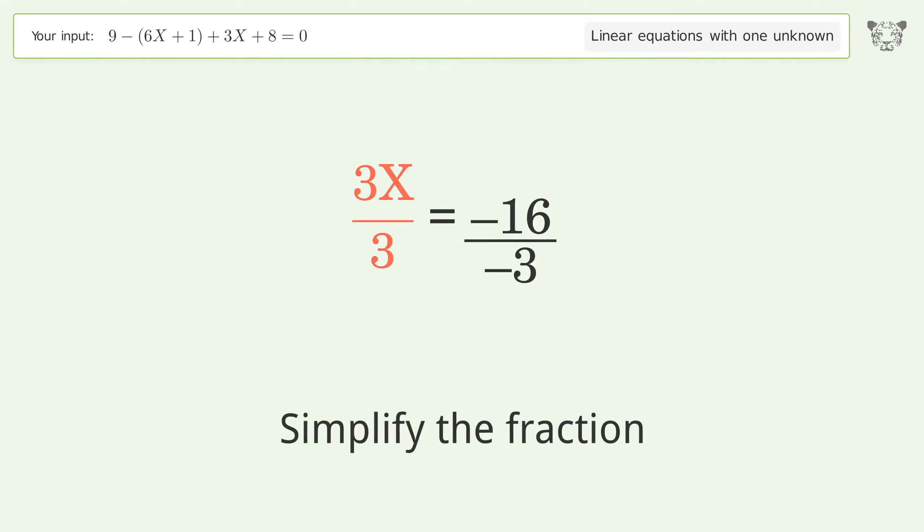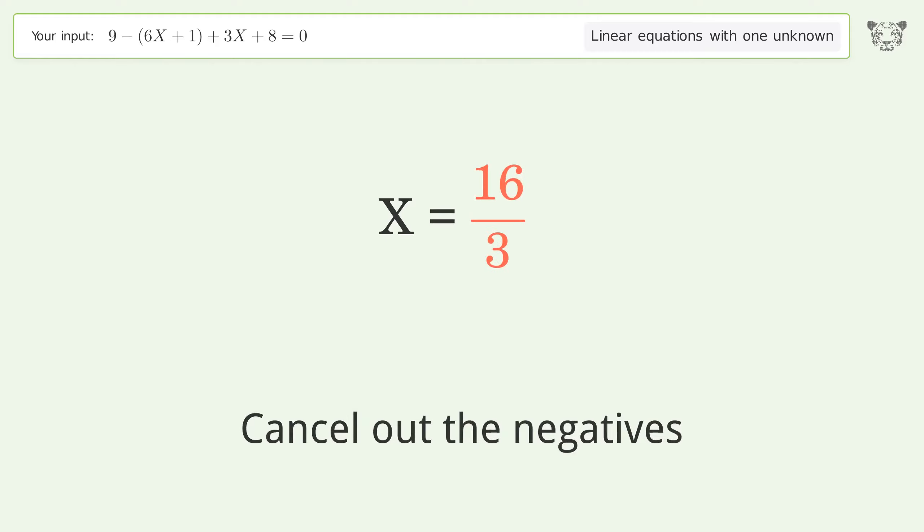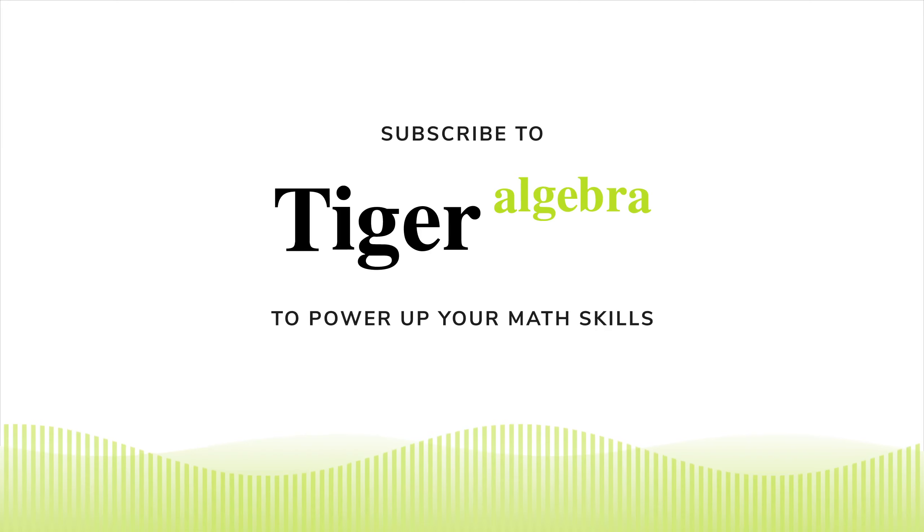Simplify the fraction. Cancel out the negatives. And so the final result is x equals 16 over 3. Thank you.